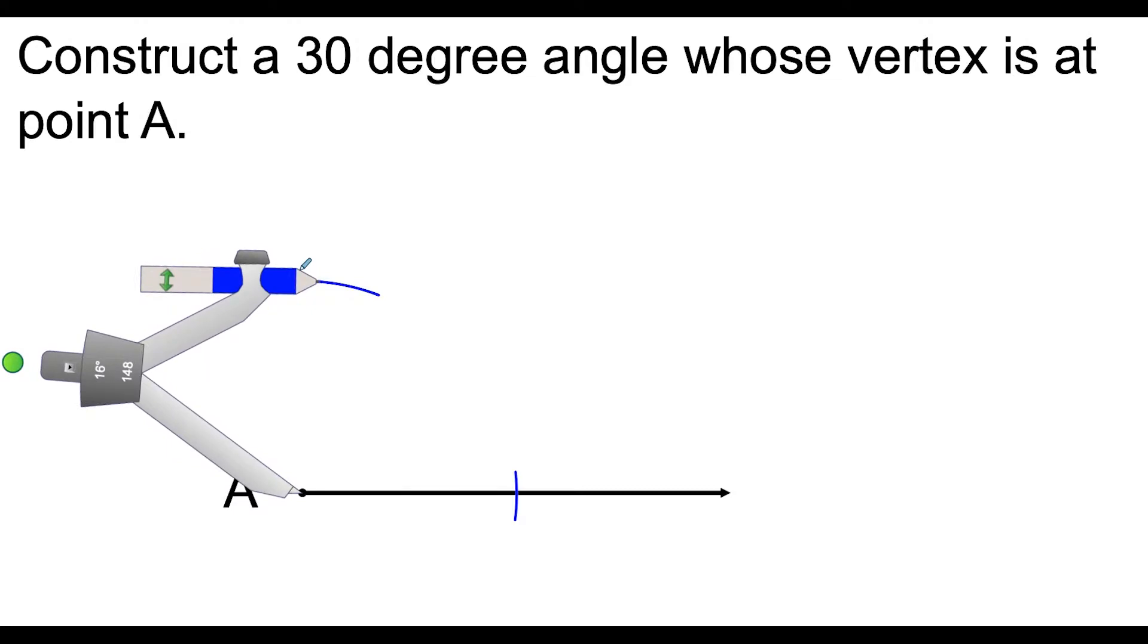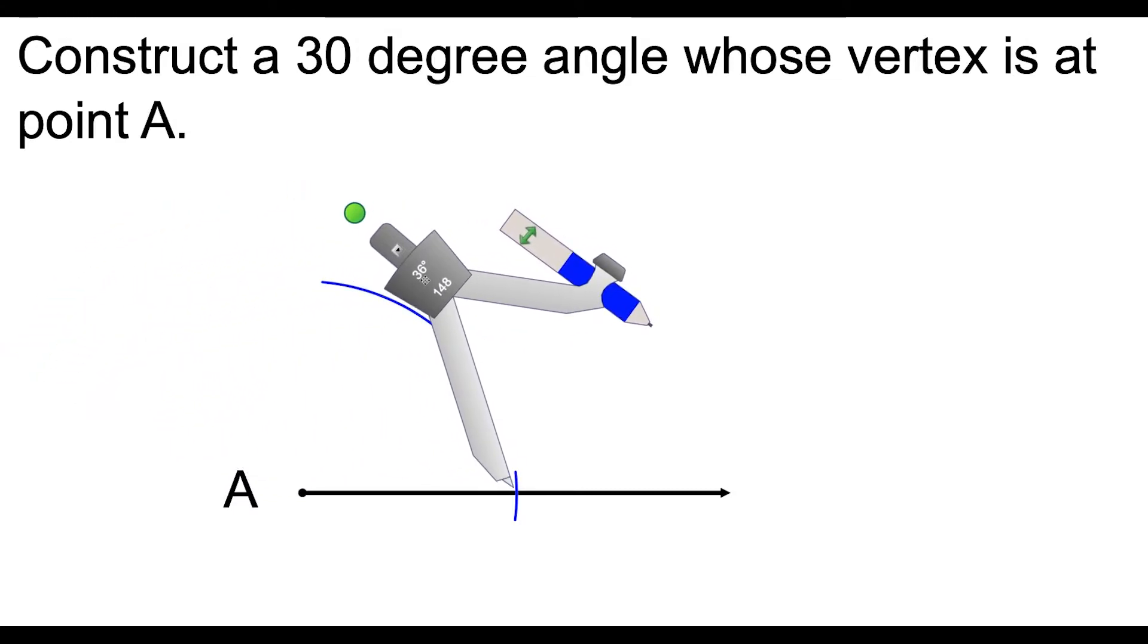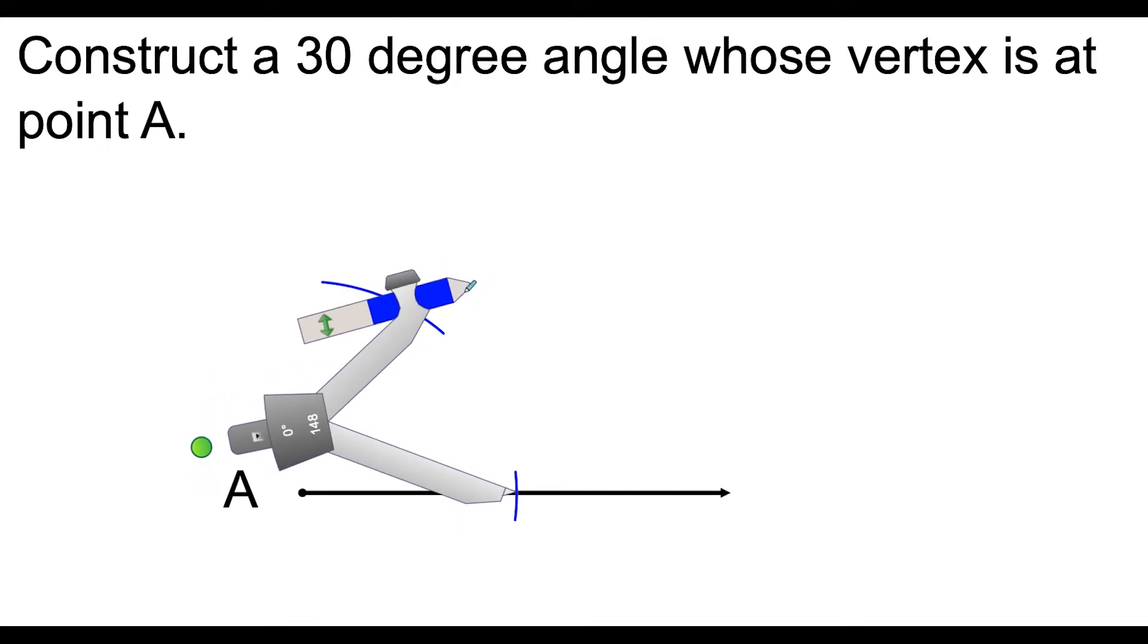So that's where we're going to swing this next arc in this neighborhood over here. So then to find out where exactly would that third point be of our equilateral triangle, we move the compass over to this point here and we swing another arc so that it intersects the arc up here.